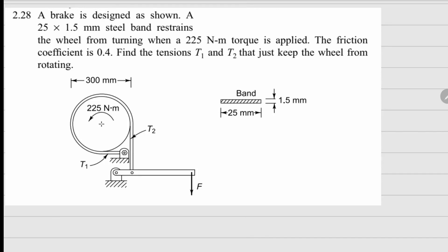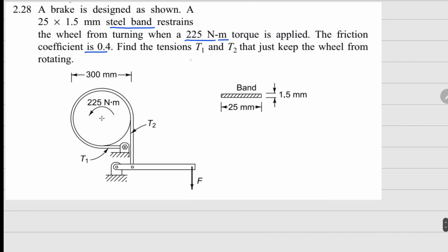This is problem 2.28. We have a brake designed as shown in the diagram. A 25 by 1.5 mm steel band restrains the wheel from turning when a torque of 225 N·m is applied. The coefficient of friction is 0.4. We need to find the tensions T1 and T2 that just keep the wheel from rotating.